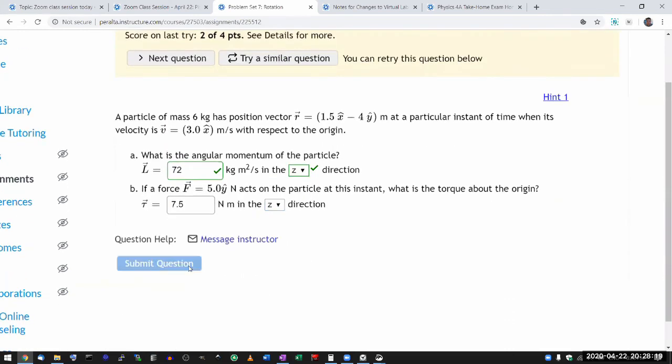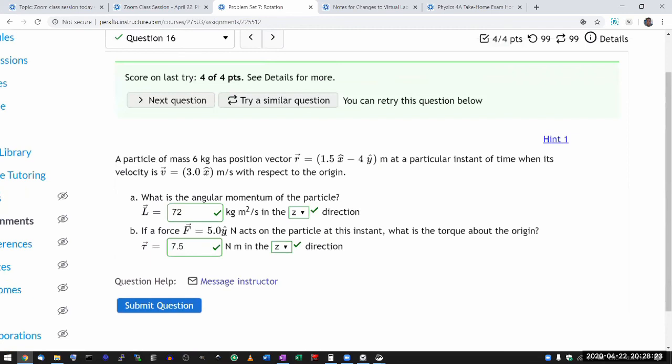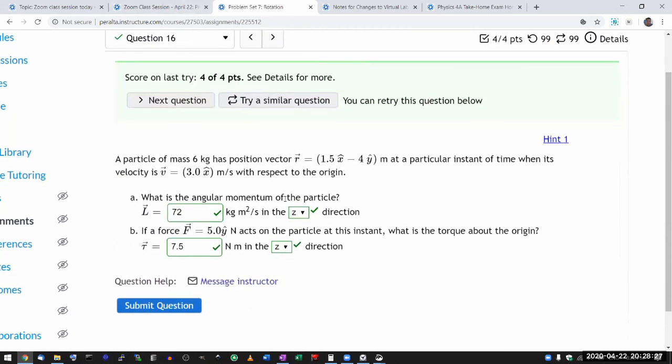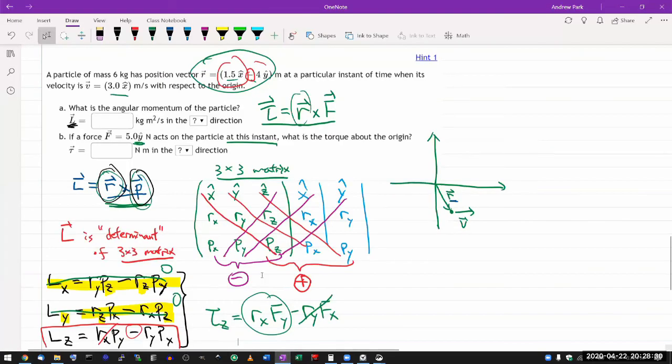Yeah, I guess negative wasn't an option anyway. I think there are a few questions like this on your homework set that tells you to apply the component definition of cross product.